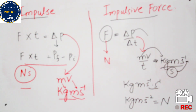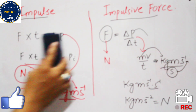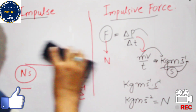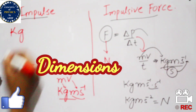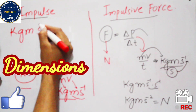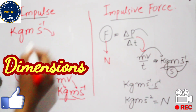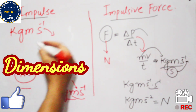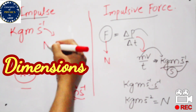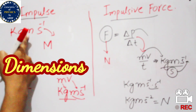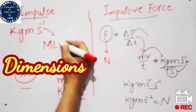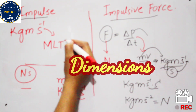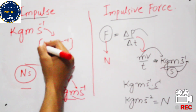The dimension of impulse will be: kilogram gives capital M for mass, meter gives L for length, and per second gives T inverse, so the dimension of impulse is MLT⁻¹.